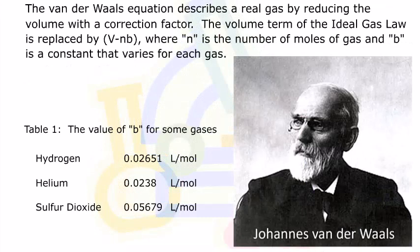The van der Waals equation describes a real gas by reducing the volume with a correction factor. The volume term of the Ideal Gas Law is replaced by V minus nB, where n is the number of moles of gas and B is a constant that varies for each gas.